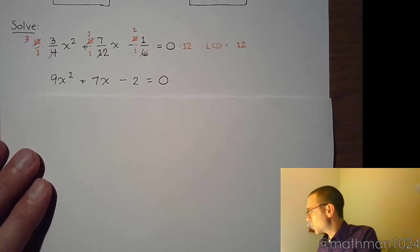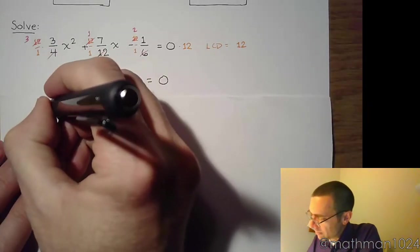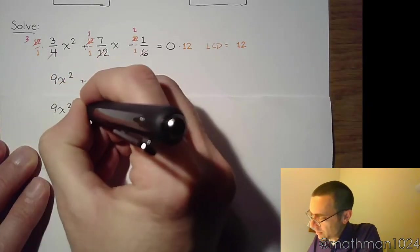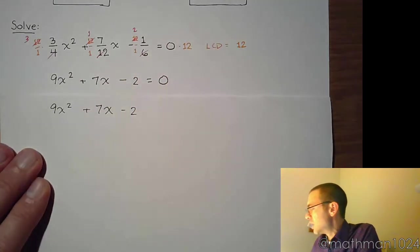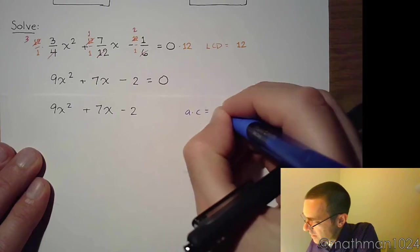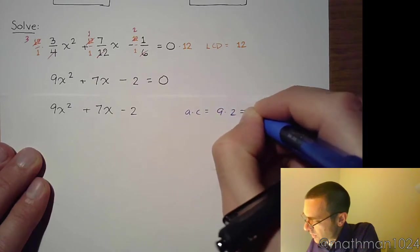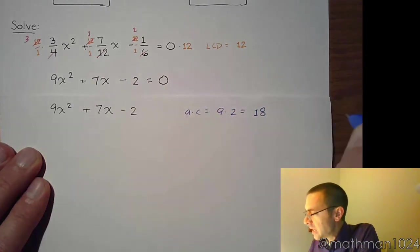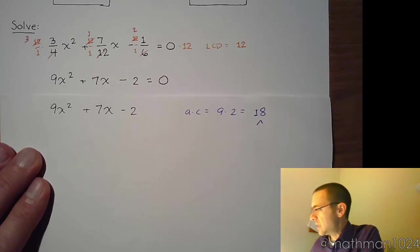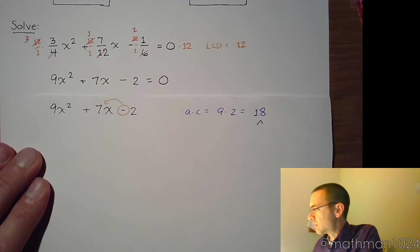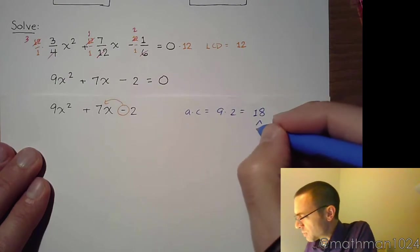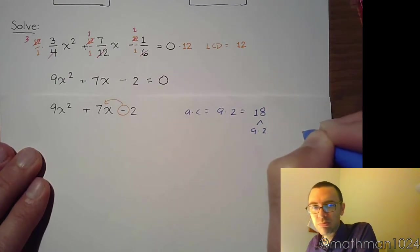Instead of using pencil, because of the way the light is, it's probably best that we use a pen here. So the AC method would say to do 9 times 2. So 9 times 2 is 18. And can you find factors of 18 that are going to subtract to give you 7? Well, that would just be 9 times 2.